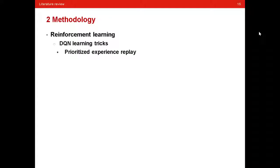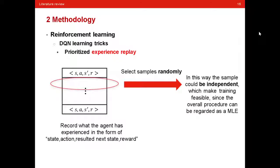The other trick used in this paper is prioritized experience replay. In the original paper of DQN, the author suggests experience replay. In this setting, we have a pool to record what the agent has experienced in the form of state, action, resulting next state, and reward.